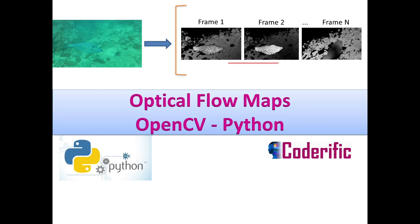Optical flow is a 2D vector field where each vector is a displacement vector showing the movement of points from the first frame to the second. In this video, as an input we are going to use a video where a single fish is moving around under the sea bed, and we are going to extract optical flow for each frame inside this video. The black and white pixels show the displacement vector — if a pixel is white it means the object is near the camera, and black objects are far from the camera.